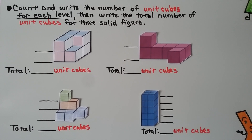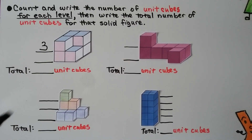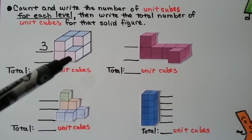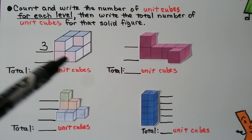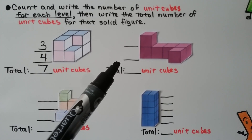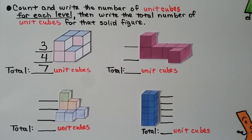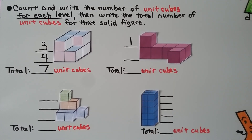We need to count and write the number of unit cubes for each level, then write the total. On the top level there are three cubes. On the bottom level there are two visible, but one is hiding in the back holding up another — so there are four on the lower level. That's a total of seven unit cubes. The next figure has one cube on the top level and five on the bottom level, for a total of six unit cubes.